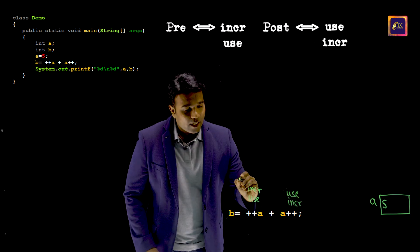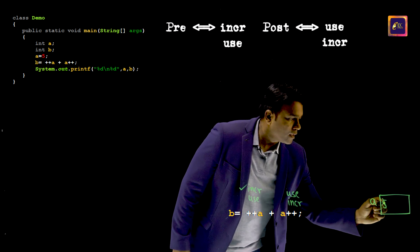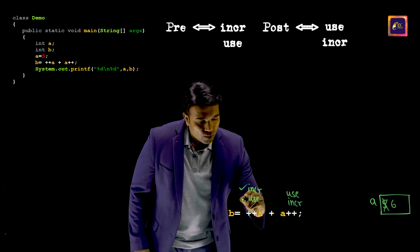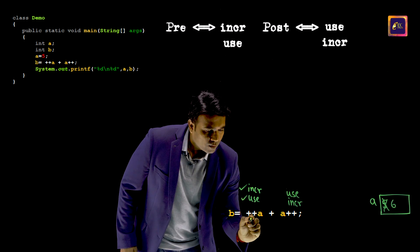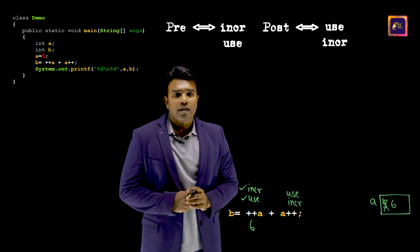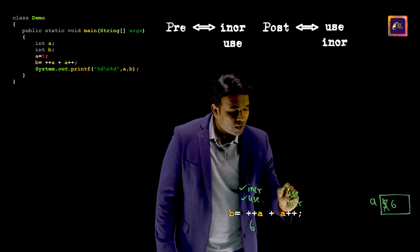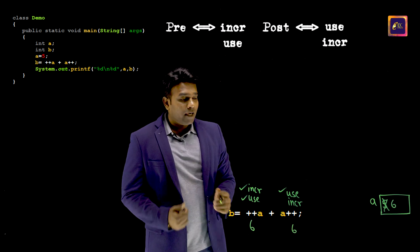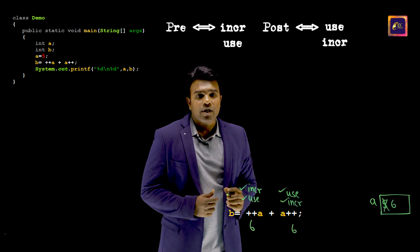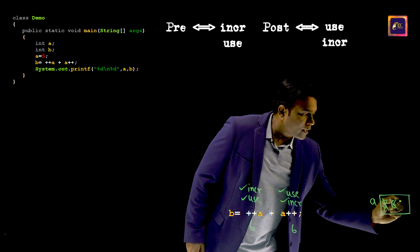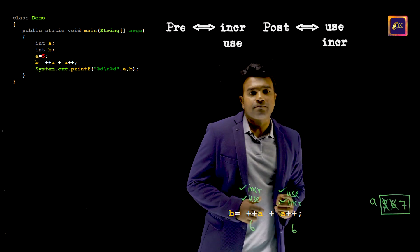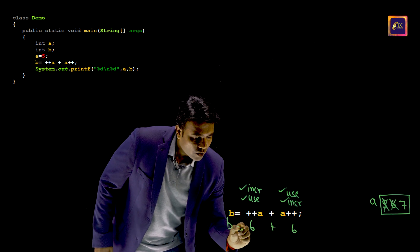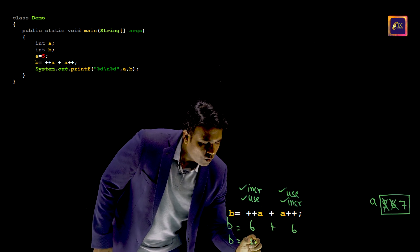Applying it quickly: increment — this becomes 6. Use — so I will use that value 6. Next, this is use, so I will use that 6, and then it is increment — so I am going to increment it. So 6 plus 6, that is 12, is what gets into B.